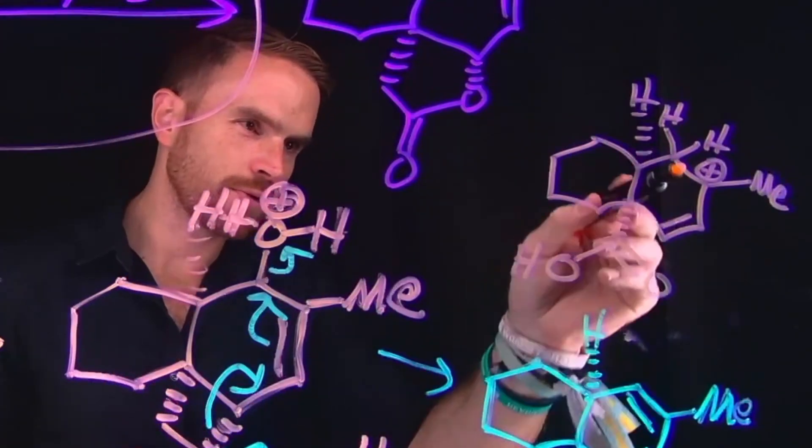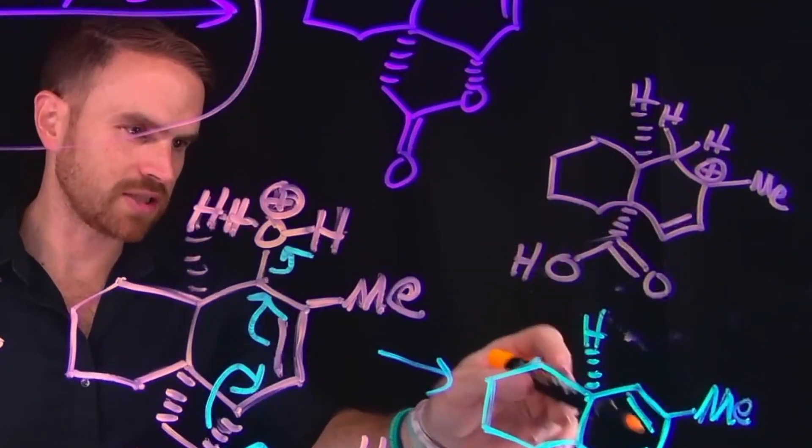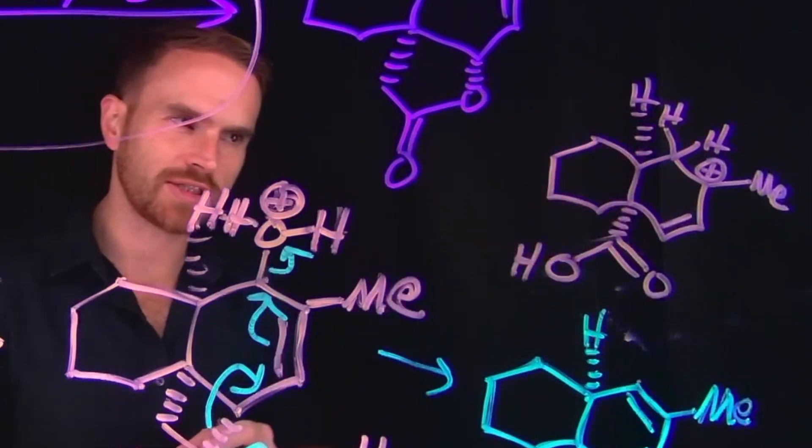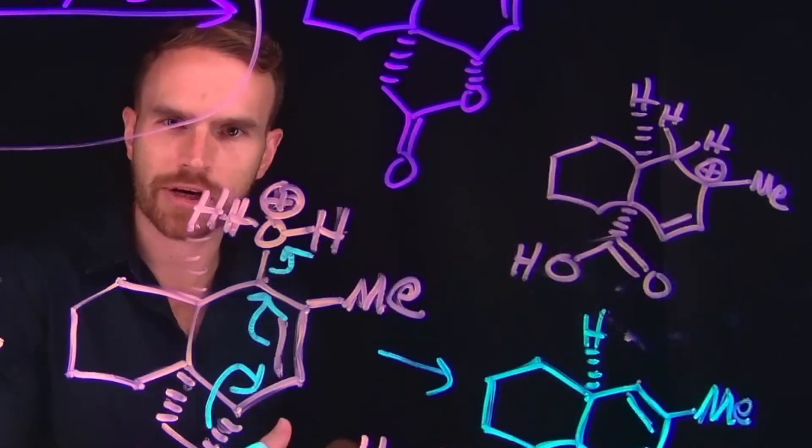So that proton transfer that occurred leaves behind this carbocation. So remember, we have taken these pi electrons, which has been protonated at this carbon position. So now we see that there are two hydrogens here. And this is going to leave behind a carbocation that is relatively stable, given that it's a tertiary carbocation.